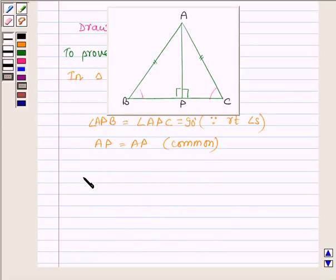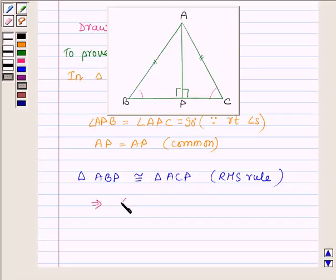So this implies triangle ABP is congruent to triangle ACP, and this is by the RHS rule of congruence. This implies angle B is equal to angle C.